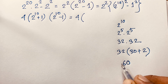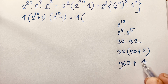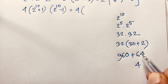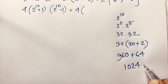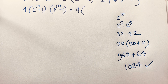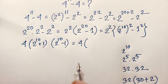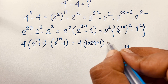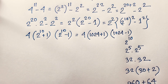Now: 32 times 30 gives 960, then 3 times 2 gives 6, 3 times 3 gives 9, and 2 times 2 gives 4. Adding these up: 6 plus 6 gives 12, carry 1, giving 1024. So 2 to the power 10 equals 1024, as is well known.